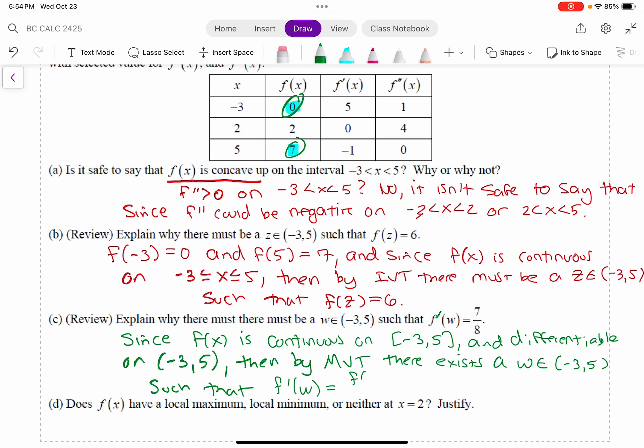So it's f of 5 minus f of negative 3 divided by 5 minus negative 3. And that's 7 minus 0 divided by 8, which is 7 eighths. Okay, so that's a good little review.